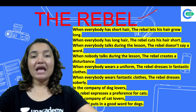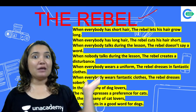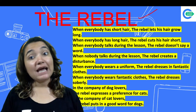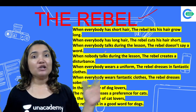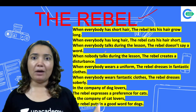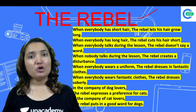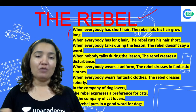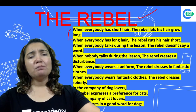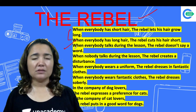Okay, let's read the poem. 'When everybody has short hair, the rebel lets his hair grow long.' Jab sabke baal chote hote hain, toh rebel apne baal lambe kar deta hai — completely opposite to what's happening. 'When everybody has long hair, the rebel cuts his hair short.' Jab fashion hai lambe baalon ka, toh rebel apne baal chote kara lega. 'When everybody talks during the lesson, the rebel doesn't say a word' — tab rebel bilkul chup baitha rahta hai.